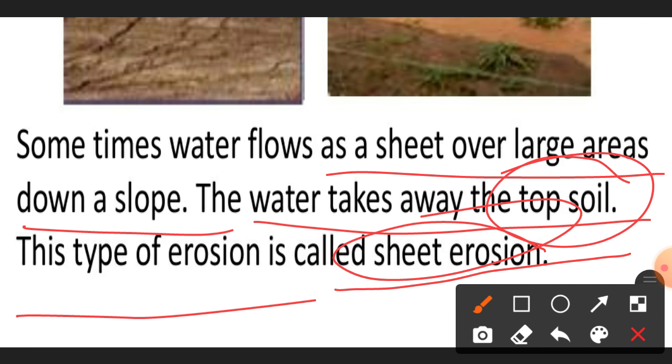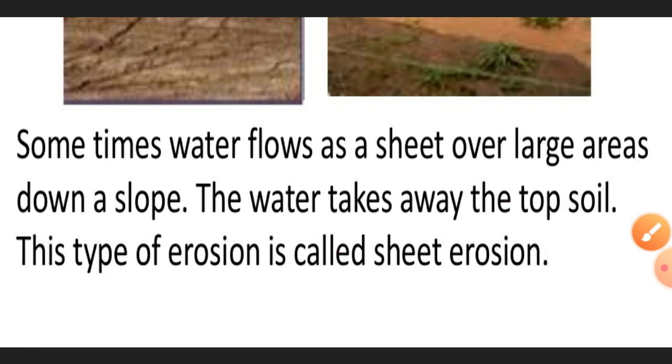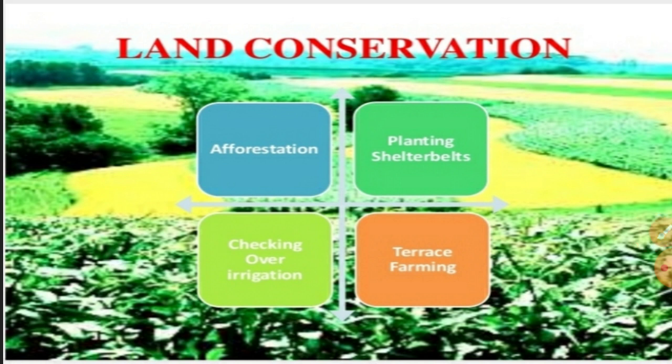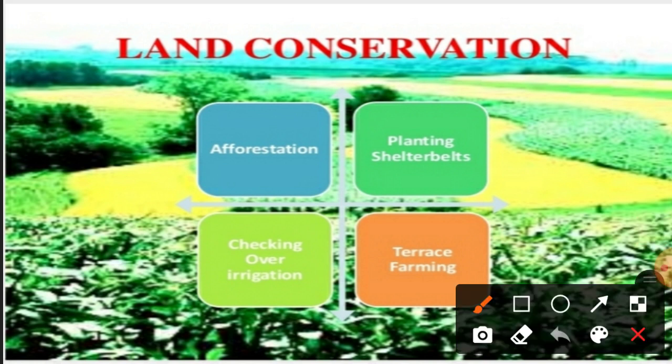Due to gully erosion and sheet erosion, there is great damage to the soil — it becomes infertile and degraded. We need to produce more and more food crops and other crops to meet the increasing demand of the population. So we need to conserve the land to satisfy the needs of present and future generations. Since deforestation causes soil erosion, we need to do afforestation.